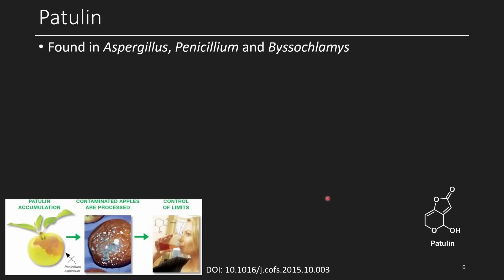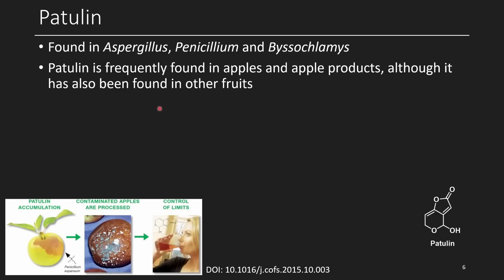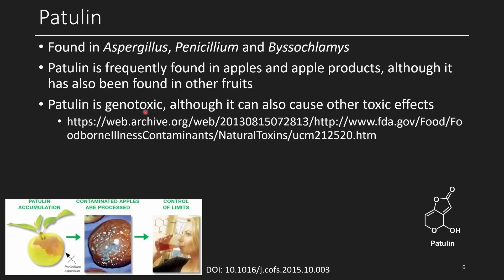The next compound is patulin, a small molecule featuring an alpha-beta unsaturated group, alpha-beta-gamma-delta unsaturation, and a hemiacetal group. It's found in various molds including aspergillus and penicillium, and is frequently found in apples and apple products specifically. Patulin is genotoxic and causes several other toxic effects. Contaminated apples in large-scale processes will inevitably contaminate the final consumer product.